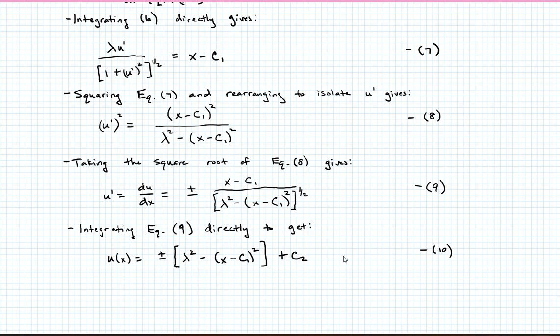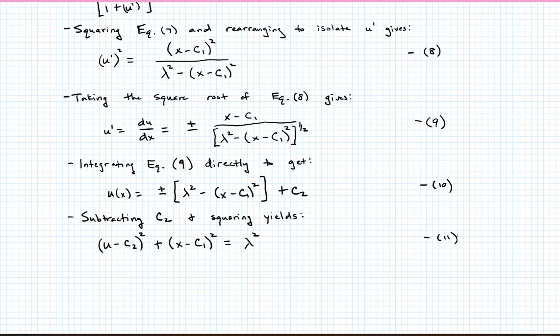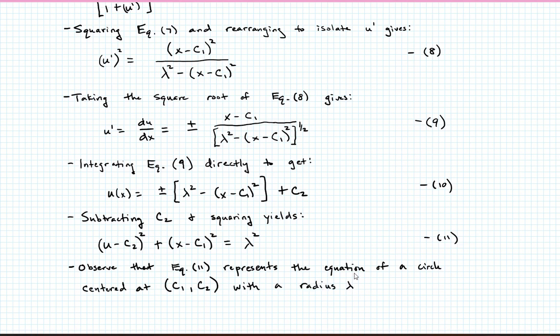Now I'm going to subtract c2 from both sides and square. When I do that, I end up with u minus c2, the quantity squared, plus x minus c1, the quantity squared, is equal to lambda squared. Let's call that equation 11. So what is equation 11? Well, you can observe pretty easily that equation 11 represents the equation of a circle. And that circle is going to be centered at c1, c2 with some radius lambda. Remember when we developed the Lagrange multiplier method, I mentioned that frequently in problems of applied math or physics, the Lagrange multiplier lambda takes on physical significance. In this case, it takes on the value of the radius of that circle.